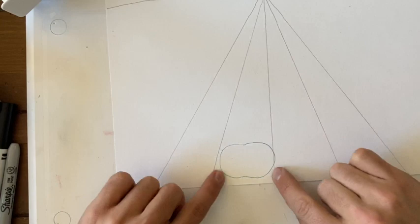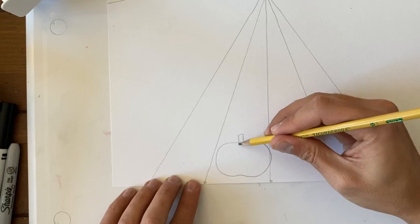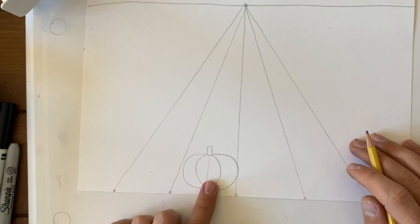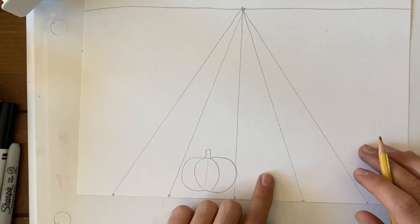So, I'm going to make a pumpkin shape right in here, but I don't want my pumpkin to go past these lines. Here's a stem, and I will add some pumpkin lines. Okay, hmm, I wonder what else I can grow on my farm.